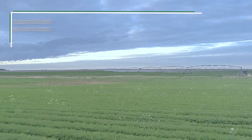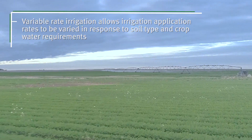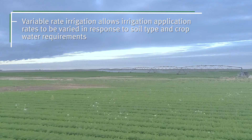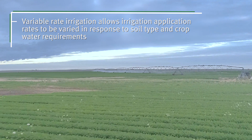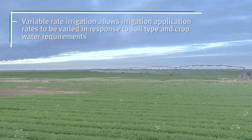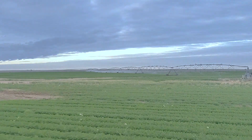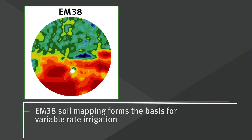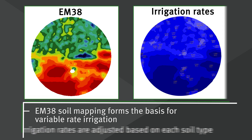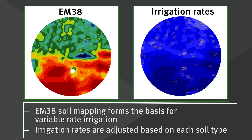Variable rate irrigation allows irrigation application rates to be varied in response to soil type and crop water requirements. EM38 soil mapping generally forms the basis for VR irrigation as it depicts differences in soil characteristics, including soil types. Irrigation rates are then adjusted based on each soil type.